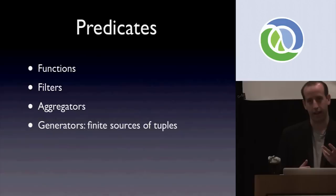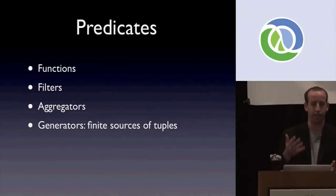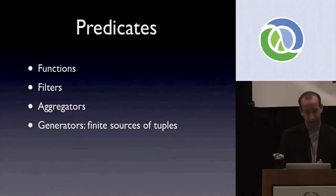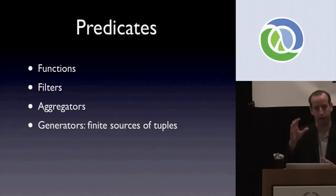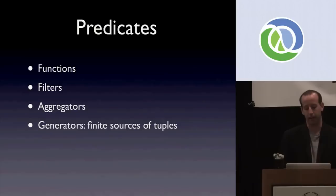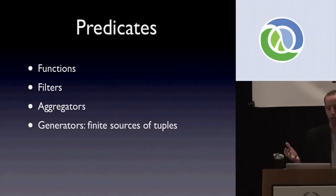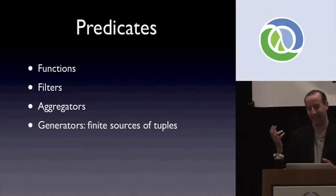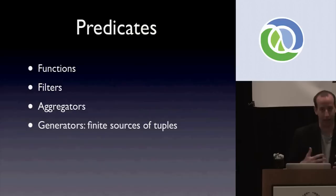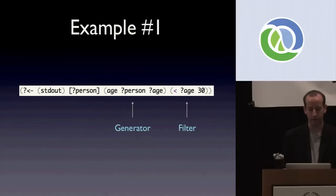There are four kinds of predicates in Cascalog. Functions define a constraint between a set of inputs and outputs — examples are addition or multiplication. Filters define a constraint on just a set of inputs — something like greater-than or less-than. Aggregators define a computation on a group of tuples — counting or summing — operating on multiple tuples at once. And finally, generators are a finite source of tuples — like a Clojure vector, 3 terabytes of data in HDFS, or a MySQL table. It's just some source of tuples.